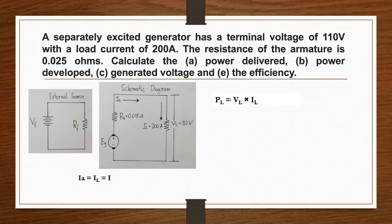Calculate the power delivered. P_L is equal to load voltage times load current, which is 110 volts times 200 ampere. Our power delivered is 22,000 watts.